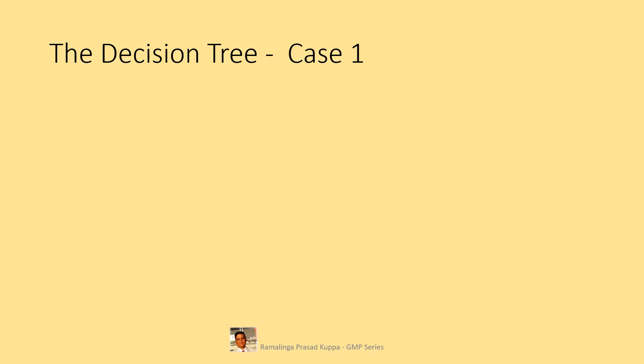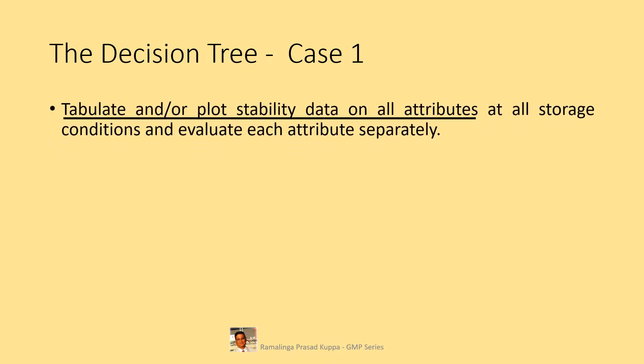Let us understand each case separately. While explaining each case, keep a copy of the decision tree handy to follow easily and for better understanding. Let us see Case 1: tabulate and/or plot stability data on all attributes at all storage conditions and evaluate each attribute separately. First of all, tabulate all numerical data in an Excel sheet. Excel sheet is recommended because all statistical evaluation could be carried out easily. Data from both accelerated conditions and long-term conditions have to be considered for evaluation.